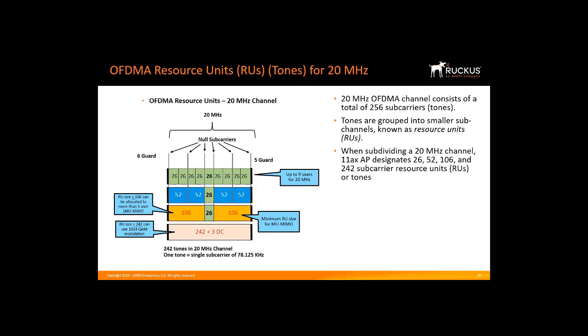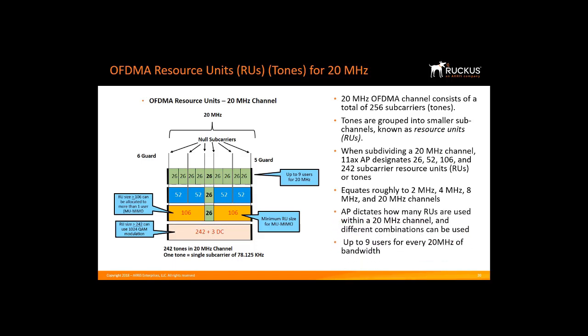For example, when subdividing a 20 MHz channel, an 11AX AP designates 26, 52, 106, and 242 sub-carrier resource units, which equates roughly to 2, 4, 8, and 20 MHz channels respectively. An 11AX AP dictates how many RUs are used within any 20 MHz channel and different combinations can be used.